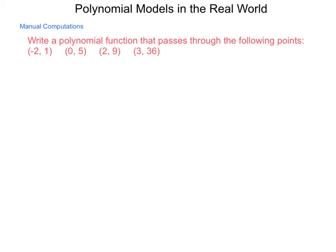We're going to write a polynomial function that passes through the following points: negative 2, 1; 0, 5; 2, 9; and 3, 36. Now, what we need to do to begin with is look at the domain values. We have negative 2, 0, 2, and 3. Since each one is different, we can use our n plus 1 principle. We have 4 points. So that means this is 3 plus 1. We can create a cubic function that will match these perfectly.